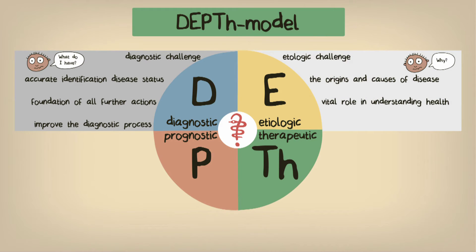While information about the causes of a disease isn't always directly useful in clinical decision-making, it plays a vital role in disease prevention and may be the starting point for the development of new interventions. Following this etiologic phase, we have the prognostic challenge.